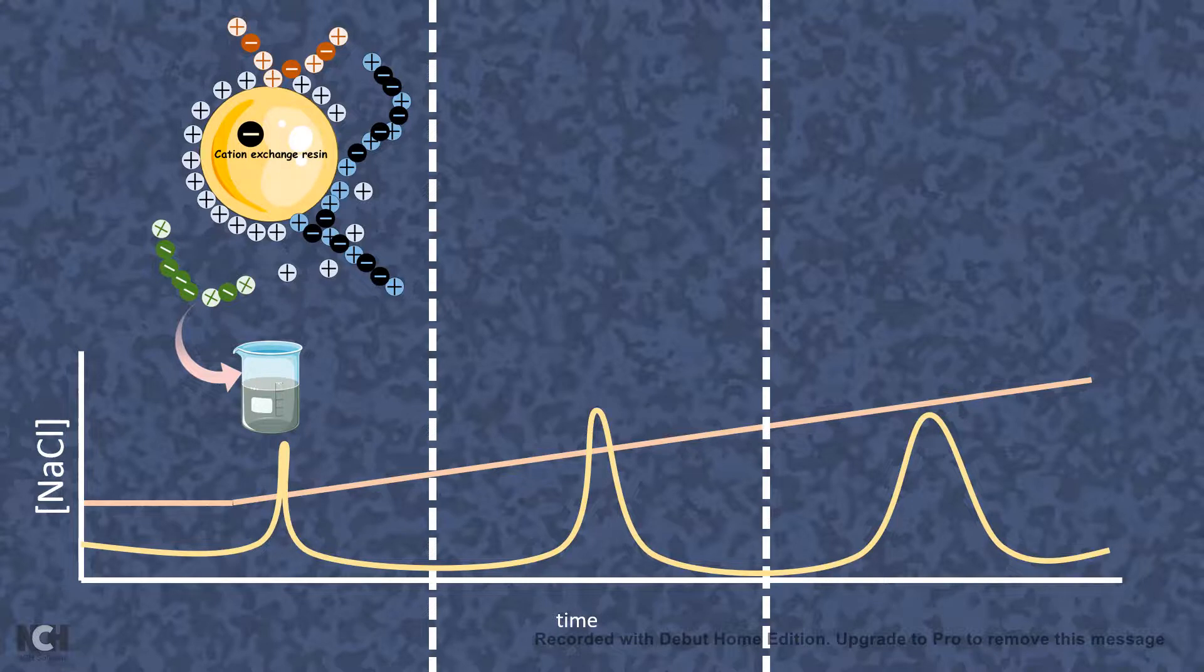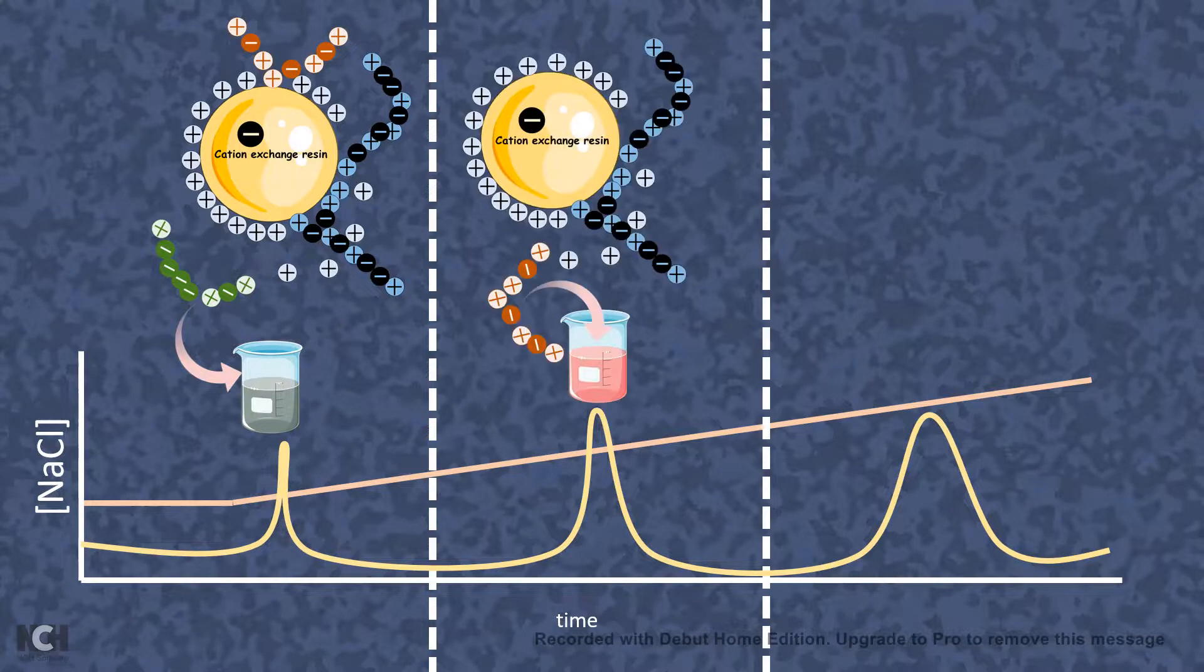The blue one has the highest amount of positive charge, followed by the orange, and the green has the least amount of positive charge. So whenever we increase the sodium concentration a little bit, what happens is the green one gets eluted first because it has the weakest possible interaction with the cation exchange resin. Then the orange one would be eluted.